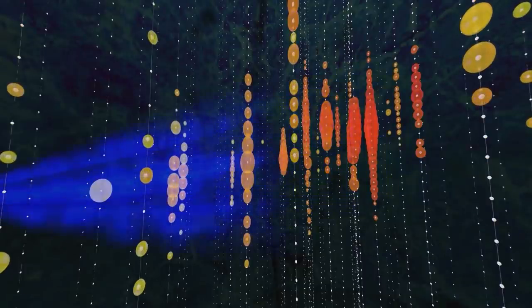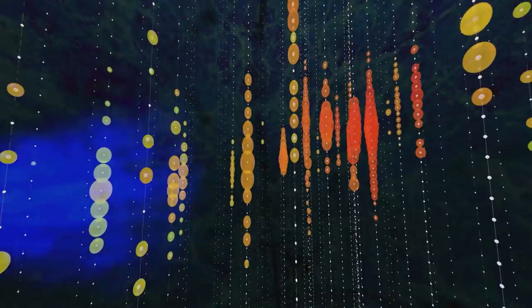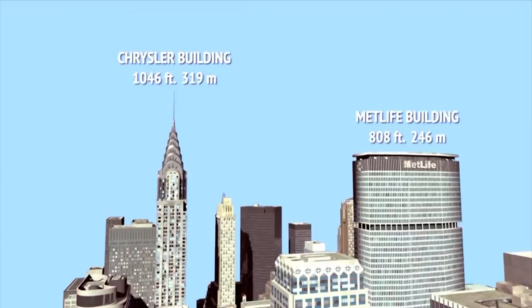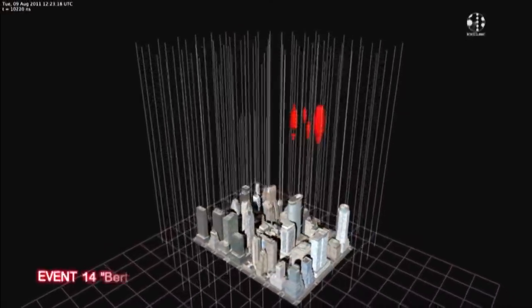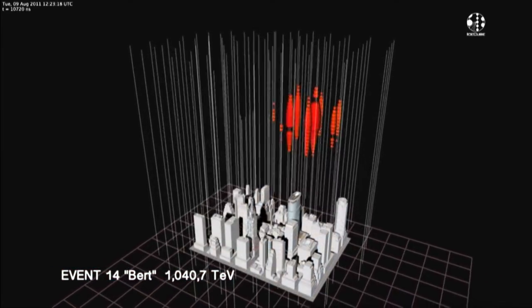It's this that we identify with the IceCube. We have succeeded in identifying high-energy neutrinos for the first time. Ernie and Bert - they had such high energy that it was extremely unlikely that they were created in the Earth's atmosphere. These neutrinos must have come from outside our solar system.